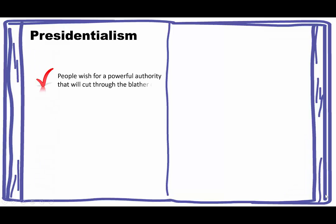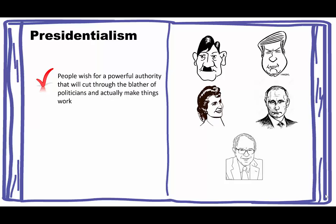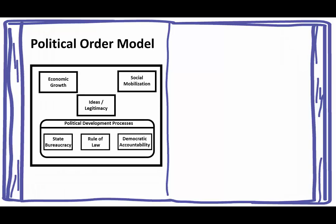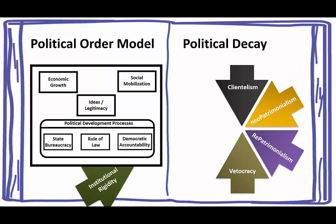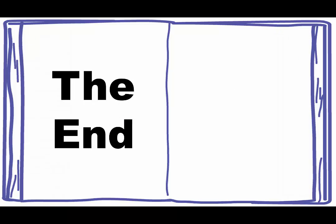Presidentialism, the last of the decay types, is where people wish for a powerful authority that will cut through the blather of politicians and actually make things work. There are a number of historical figures people have hoped would do this, but it's really anti-democratic. So we've now covered Fukuyama's six dimensions of political order and his six concepts of political decay from his book Political Order and Political Decay. Thank you.